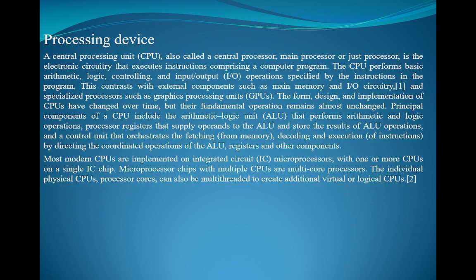For more information on processing devices: a central processing unit, also called a central processor, main processor, or just processor, is the electronic circuit that executes instructions comprising a computer program. The CPU performs basic arithmetic, logic, controlling, and input-output operations specified by the instructions in the program. This contrasts with external components such as main memory and circuit, and specialized processors such as graphics processing units.